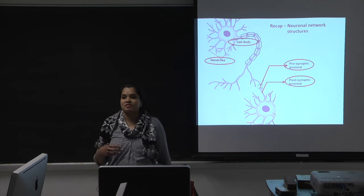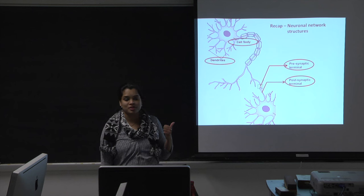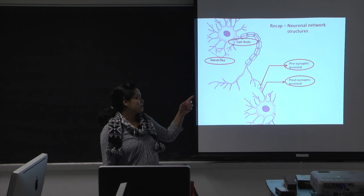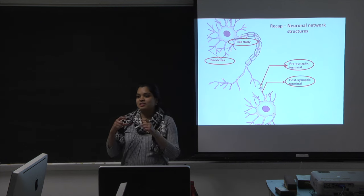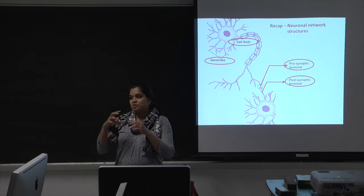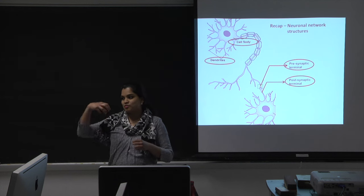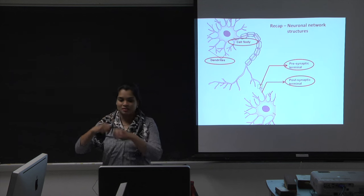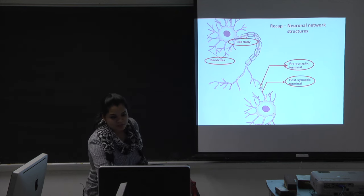More specifically, I captured just these four structures in my images: cell bodies, dendrites, the presynaptic terminal, and the postsynaptic terminal. It's not possible to capture a synapse itself — a synapse is formed when you have a presynaptic terminal and a postsynaptic terminal. So these are the four structures that I captured.